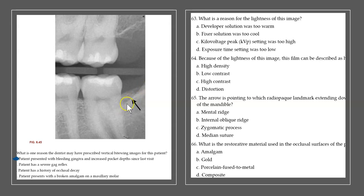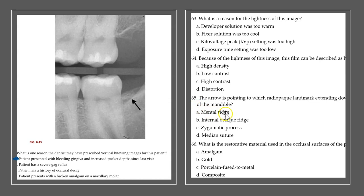Radio opaque structures appear white on radiographs; radio lucent structures appear black. The arrow in this image is pointing to a radio opaque structure — the internal oblique ridge, a bone that extends downward from the ramus of the mandible. The mental ridge is near the premolar area; the zygomatic process is in the maxillary arch; the median suture appears between the maxillary central incisors. So the correct answer is the internal oblique ridge.